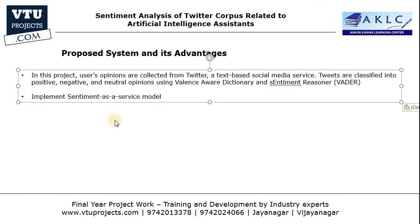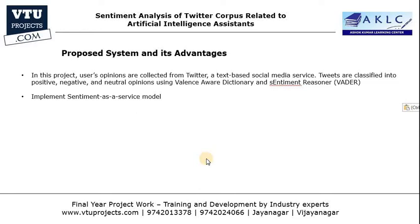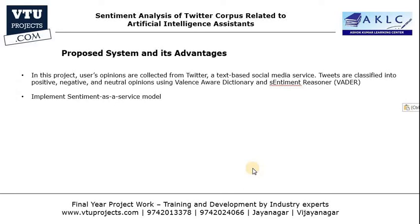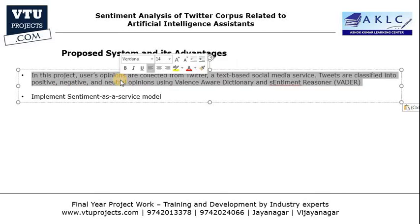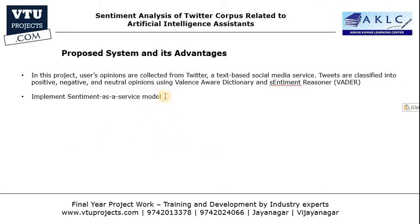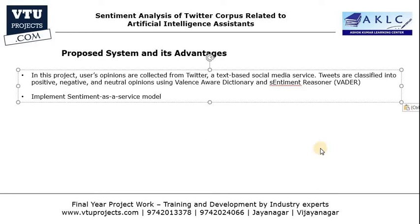Now coming to the proposed system. In this project, we are collecting text like tweets from Twitter and classifying them into positive, negative, and neutral — extracting the opinion of the person from a given tweet. For this purpose, we are making use of the VADER algorithm — Valence Aware Dictionary and Sentiment Reasoning. Apart from analyzing textual tweets from Twitter, we are also implementing our solution as a Sentiment as a Service model, so that any user across the world can make use of our solution via an internet call. Our solution will be deployed on a live cloud such as Amazon Web Services.